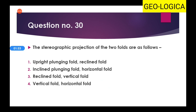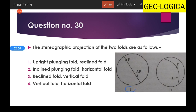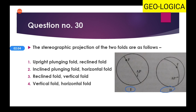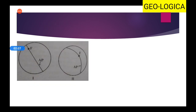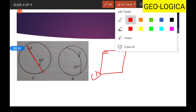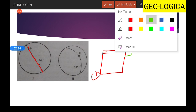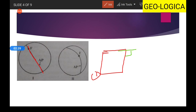The next question shows stereographic projections of two folds, fold one and fold two, and you have to interpret which folds these are. For fold one, the axial plane is vertical — it passes through the center, making a 90-degree angle with the horizontal, so it is a vertical plane.